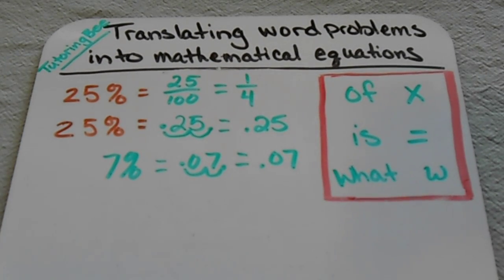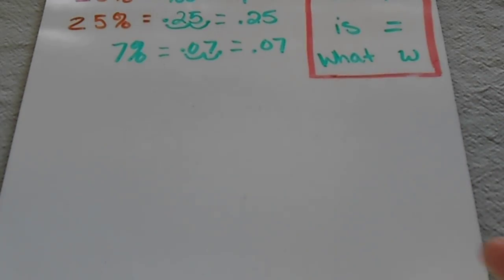Another thing that I want to go over really quickly is the wording in the word problems. In order to change these words into mathematical equations, we need to know what they mean. So 'of' always means times, 'is' always means equals, and then the 'what' is going to be your variable, the part that you're trying to figure out. So let's try some.